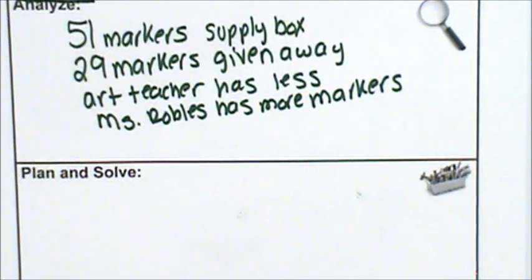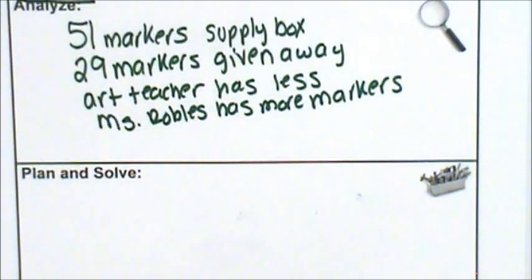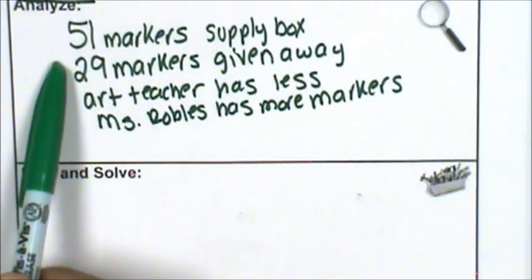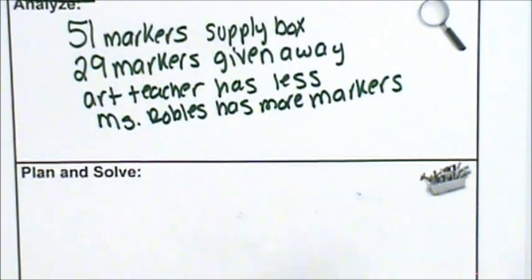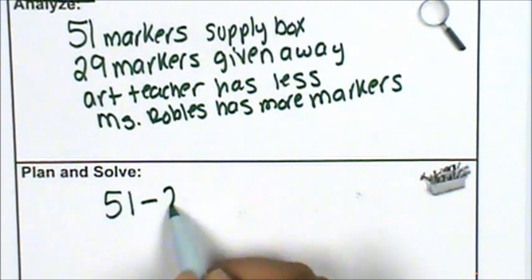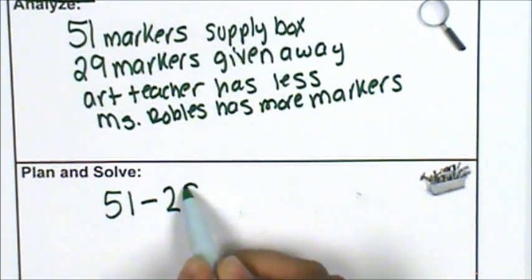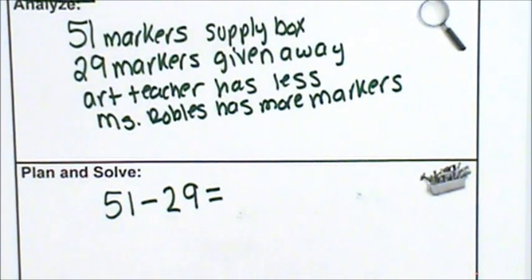What operation is implied by the problem? I think it's subtraction. The art teacher had 51 markers in her supply box and she gave 29 away. She has fewer markers than when she started: 51 minus 29.